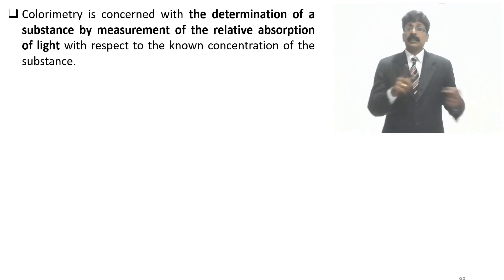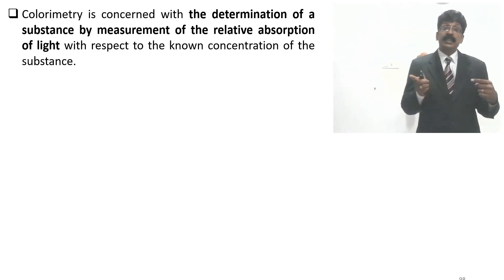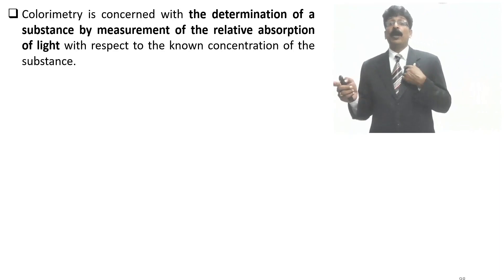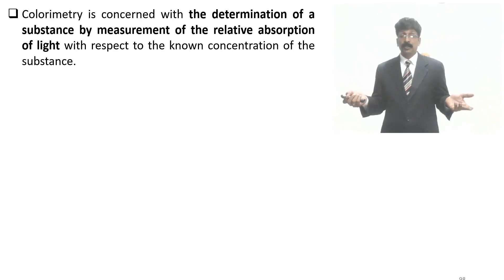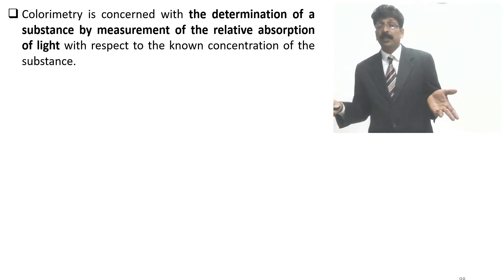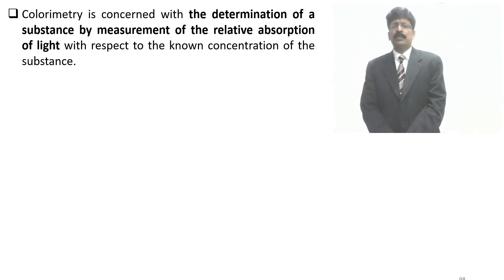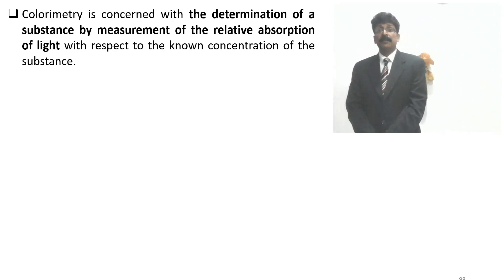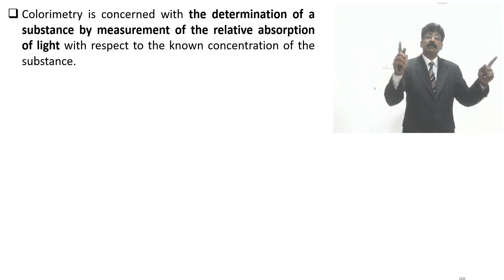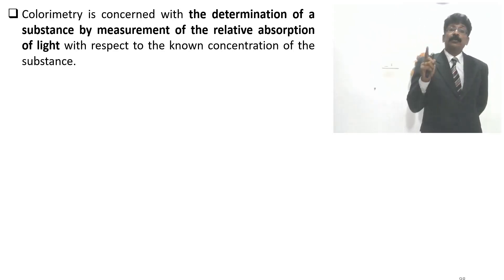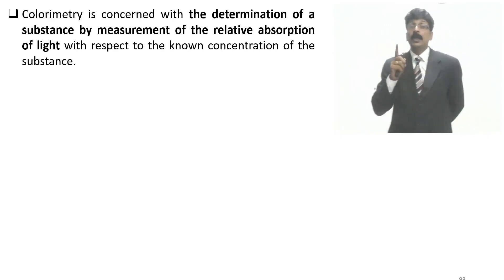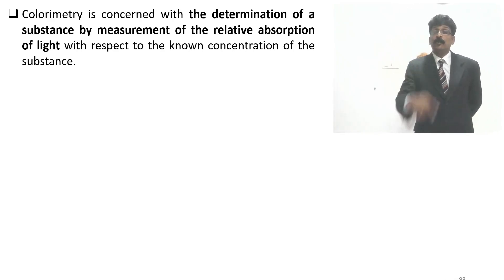Colorimetry deals with colored substances in the visible radiation range, measured in nanometers. Visible light radiation is from 400 to 700 nanometers. A black object absorbs almost all colors; white reflects all. Colorimetry is concerned with determination of a substance by measuring relative absorption of light with respect to a known concentration. If a substance is yellow, the maximum absorption of the complementary color is measured.